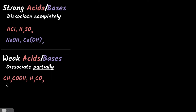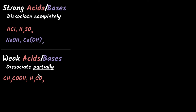On the other hand, if you take acids like acetic acid or H₂CO₃, which is called carbonic acid, and put them in water, you'll see that not all the acidic molecules will dissociate to give you H⁺ ions and CH₃COO⁻ ions. Only some of them will dissociate, and same is the case for carbonic acid. That's why we say they dissociate partially and therefore they are weak acids.